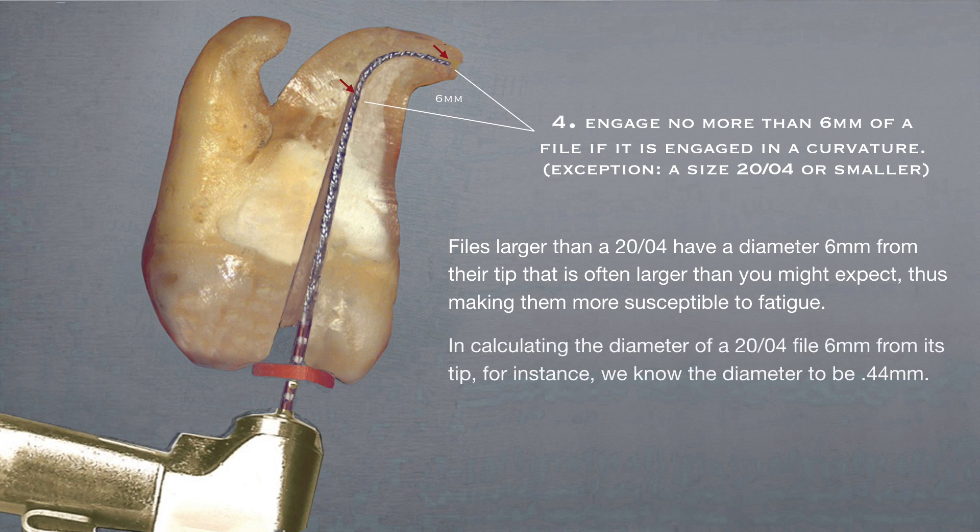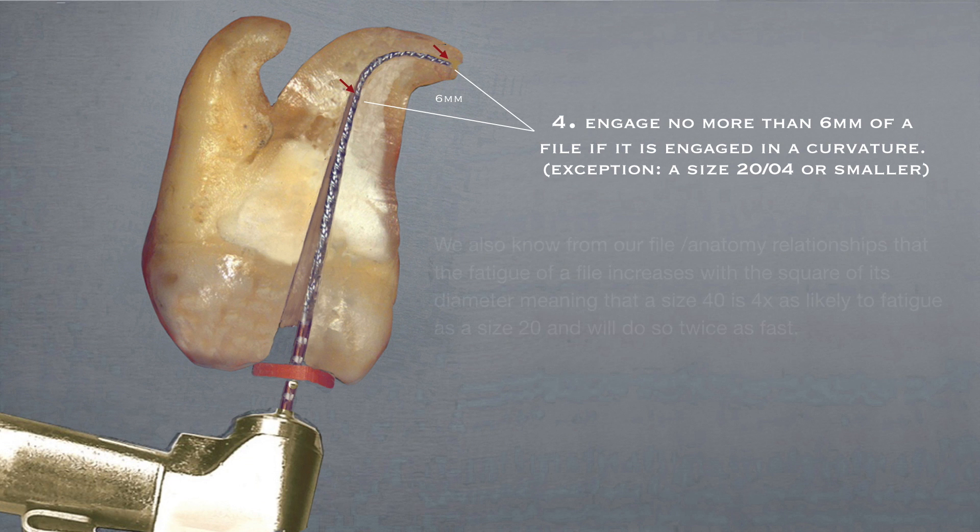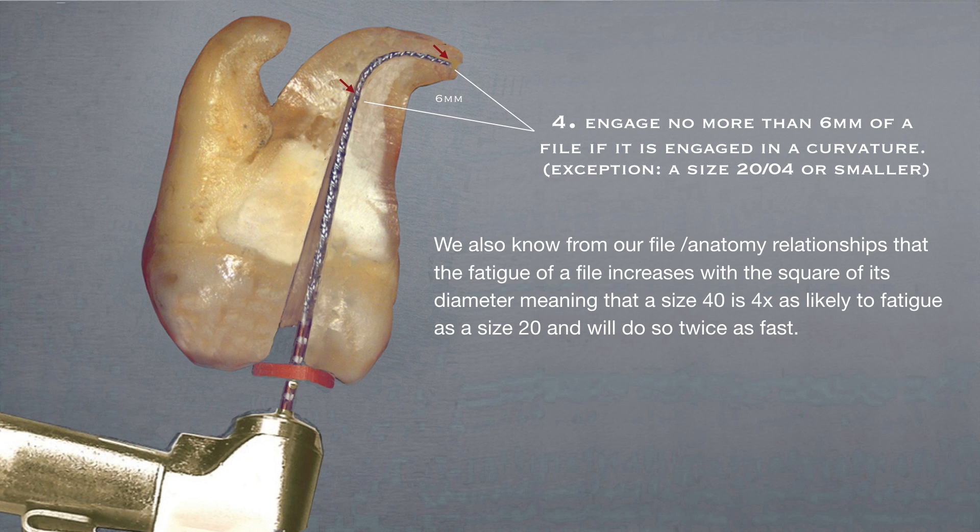In calculating the diameter of a 2004 file six millimeters from its tip, for instance, we know the diameter to be 44. We also know from our file anatomy relationships that the fatigue of a file increases with the square of its diameter, meaning that a size 40 is four times as likely to fatigue as a size 20, and will do so twice as fast.